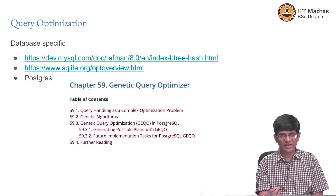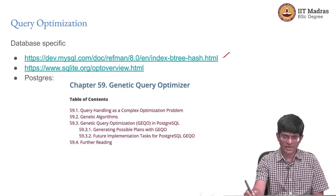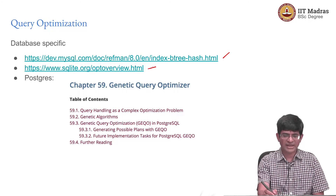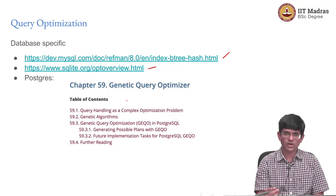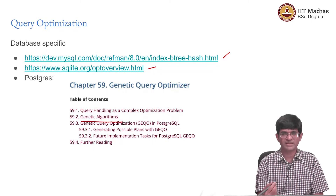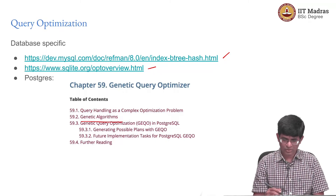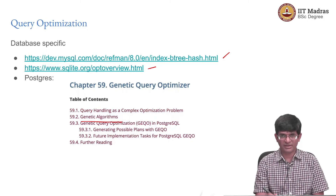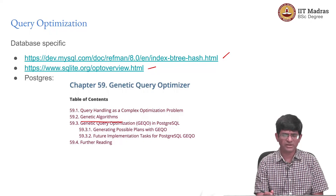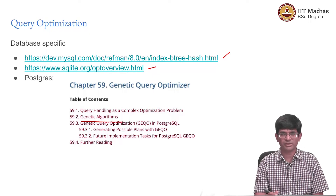Various databases have their own takes on query optimization. MySQL has a whole lot of information as I just showed you. SQLite has something about optimization as well. Postgres is in fact something of a research database in some sense — they even have things like using genetic algorithms to optimize query structures. These are all different possibilities, and this is to some extent still a topic of research even now. A large part of databases are very well studied, but there are still places where fundamental changes can be made.